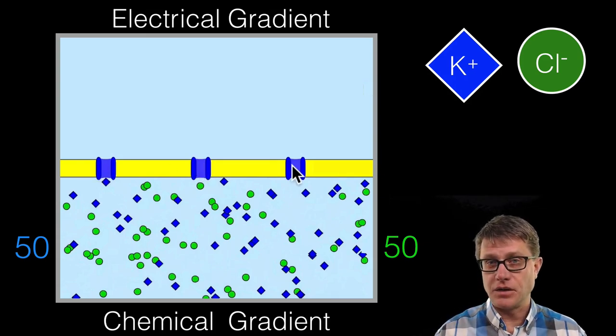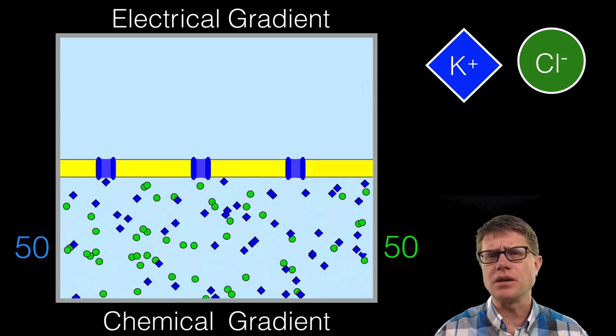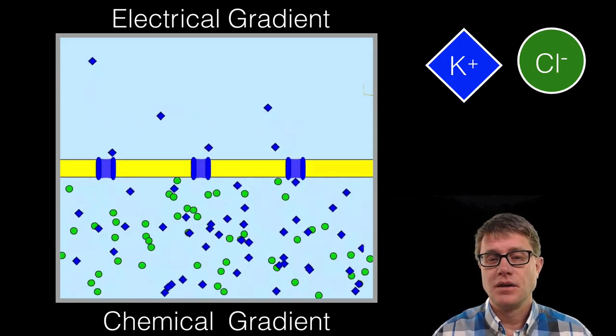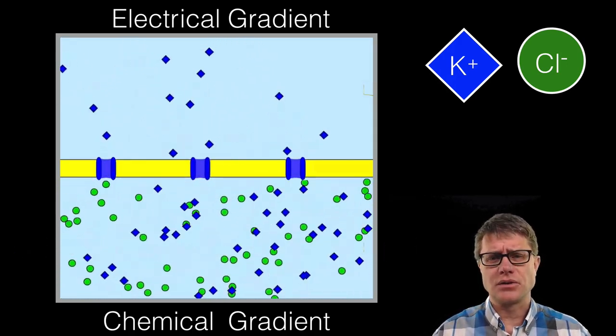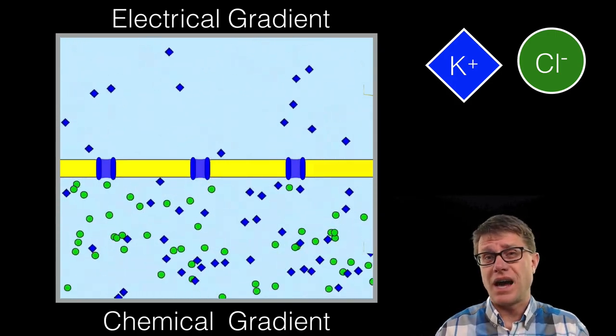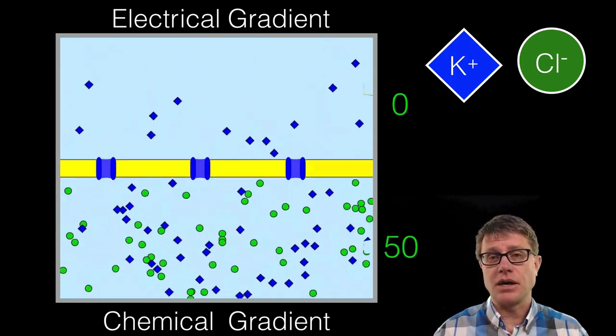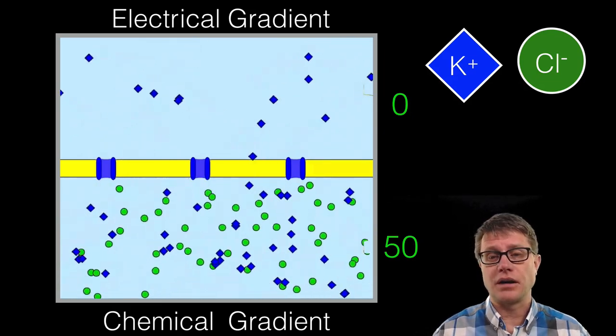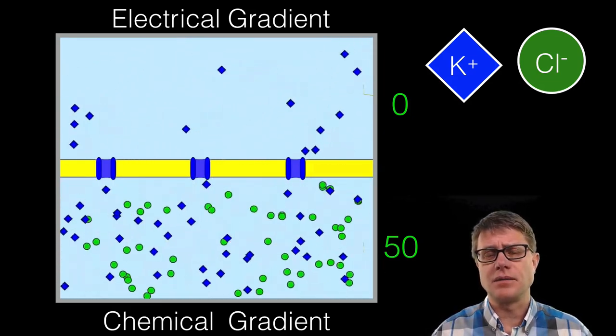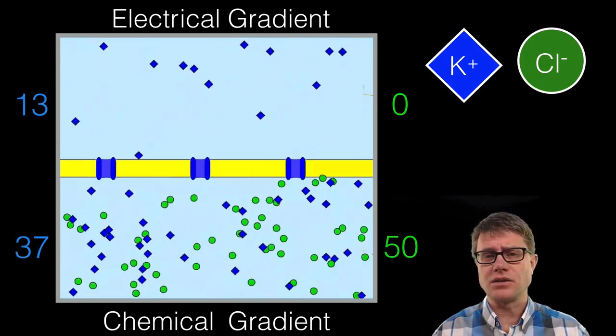So the only thing that can move through here is going to be the potassium ions. The chloride ions cannot move through. Again, we are putting 50 of each on the bottom. So predict what you think is going to happen if we let this run for a while. Hopefully you have made a prediction and let us see what happens. So this is probably what you thought was going to happen. We are getting some of that potassium to go through. And so you probably got half of this problem right. So there are 50 chloride on the bottom, zero on the top because the chloride cannot come through. But it is not 25 and 25 when it comes to the potassium ions. It is more like 37 to 13.